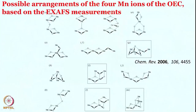The possible arrangements of the 4 manganese ions are many; some of them are shown here, including many butterfly-like structures. The structures in the box are getting support from XANES measurements. Still, from XANES also, many structures are proposed — it is not really one definitive structure. But for course purposes, keeping it simple, we will slowly evolve into one structure and try to follow that rather than trying to follow many structures, knowing very well that structure may or may not be the correct one.